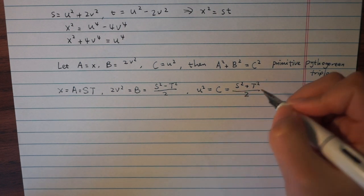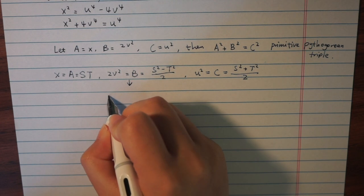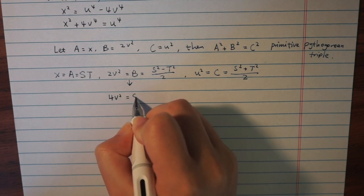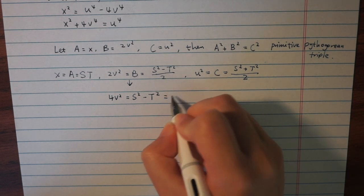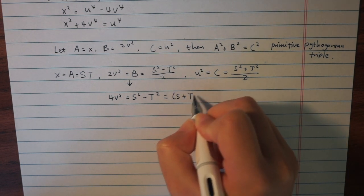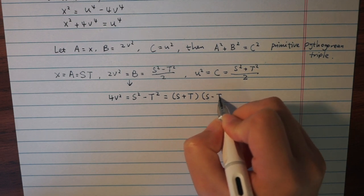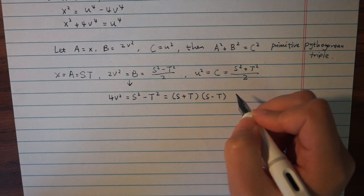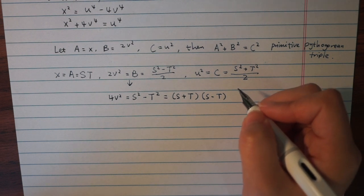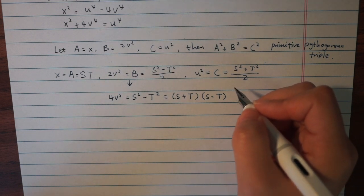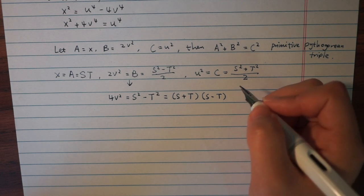The middle formula says that 4 times v squared equals capitalized S squared minus capitalized T squared, which we can factor into S minus T times S plus T. Now, S and T are odd and relatively prime, so the greatest common divisor of S minus T and S plus T is 2.